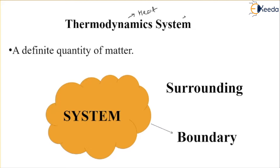Now let's come to the system. What is system? System — we can define as anything which is made up of matter. Now what is matter? Matter is anything which has mass and which occupies some space. In short, we can say the term which has mass and volume is called matter. So everything is made up of matter — even atoms and any kind of compound.